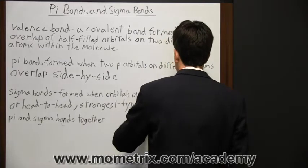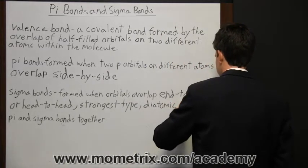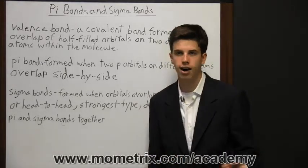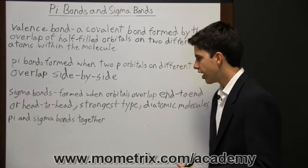And sigma bonds are often diatomic molecules. Some examples of diatomic molecules are hydrogen, oxygen, fluorine, chlorine, bromine, and iodine.